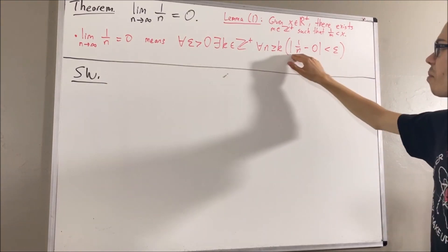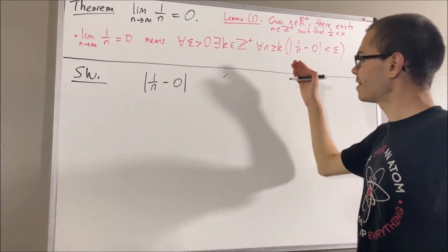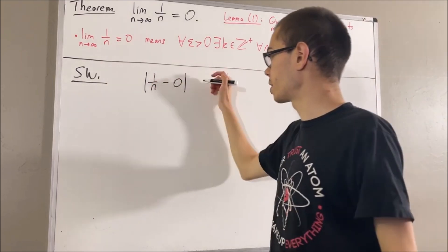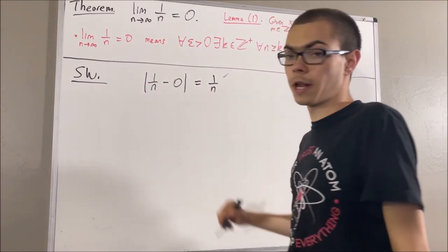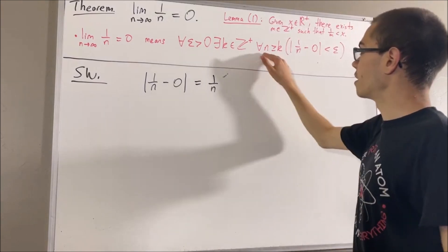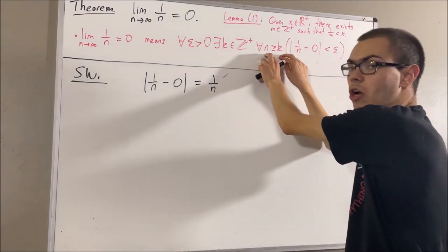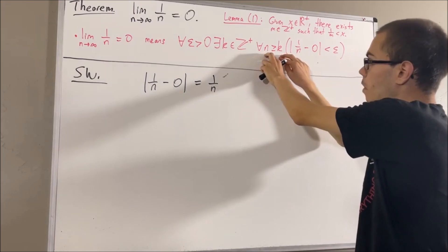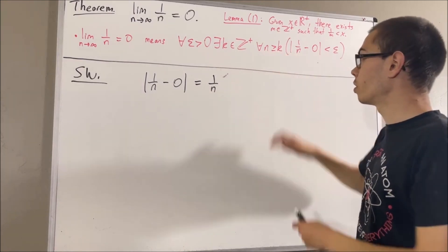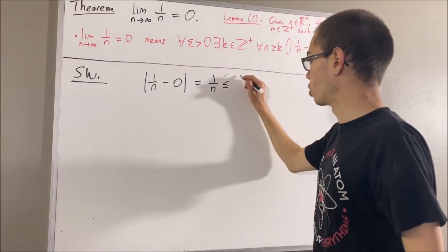So let me start out by writing this. Since n is a positive integer, the absolute value of 1 over n minus 0 is just equal to 1 over n. But since n is greater than or equal to k, and n and k are both positive, it follows if we take the reciprocal of both sides of this inequality, we have that 1 over n is less than or equal to 1 over k.